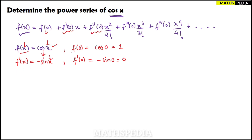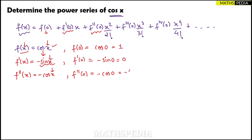Now the second derivative f''(x): differentiate the previous term minus sin x. Keeping the minus sign, the derivative of sin x is cos x, so f''(x) = -cos x. Then f''(0) = -cos(0) = -1.